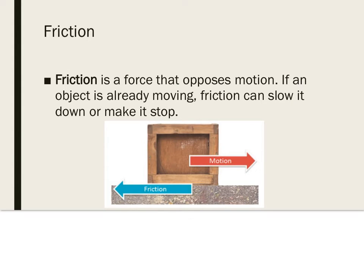Friction is a force that opposes motion. So if an object is already moving, friction can slow it down or even make it stop. When a box is slid across the ground, it will only travel a certain distance before it stops. Friction is the force that brings it to a stop. Objects on a rough surface require more force to move, and objects on a smooth surface require less force.